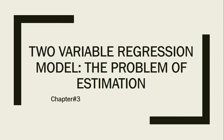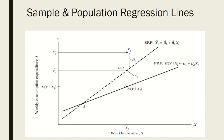This is chapter number 3, the two-variable regression model: the problem of estimation. Before going into the detail of this chapter, let's recall that in our previous lecture we had two variables — one dependent variable and one independent variable. We made a graph with the help of the population regression function, and we know that the population regression function is not directly observable, so we estimated it from the sample regression function. The sample regression function line is not the exact mirror of the population regression function line, just because of sampling error, which we have already discussed in our previous lecture.